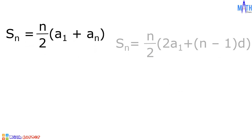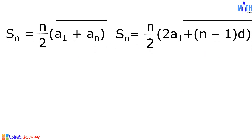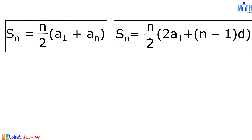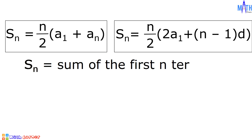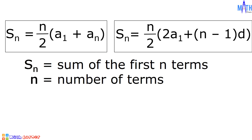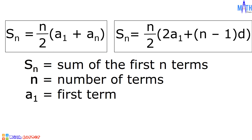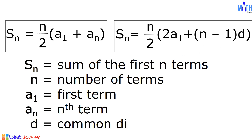These are the formulas that we can use in finding the sum of the terms of an arithmetic sequence. In this formula, S sub n is the sum of the first n terms. N is the number of terms. A sub 1 is the first term. A sub n is the nth term or the last term. D is the common difference.